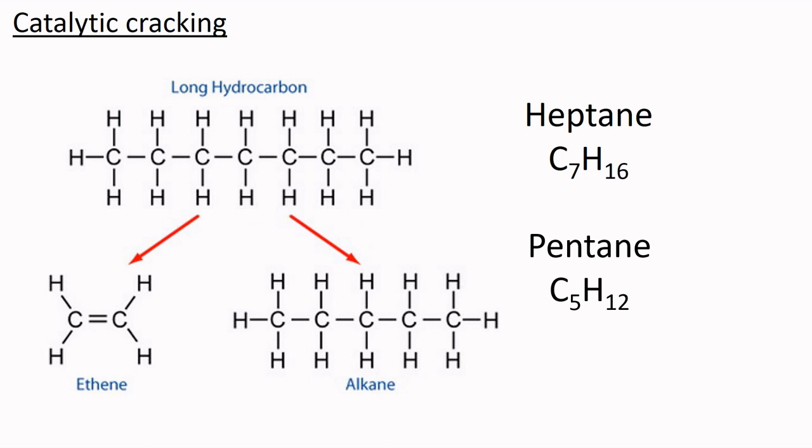And as a rule carbon has to make four bonds, so it creates a double covalent bond to achieve this. That gives us a second cracking product, ethene. Because of this double bond we say it's unsaturated.